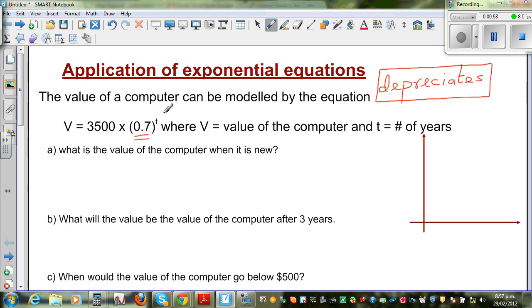Here, this 0.7 tells me that the computer is depreciating at the rate of 30%. Now you may ask, how do I know that? Because when something is depreciating by 30%, what remains is 70% of that value. And 70% as a decimal is 0.7. So in other words,